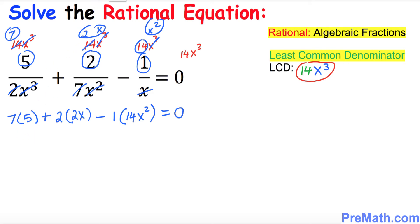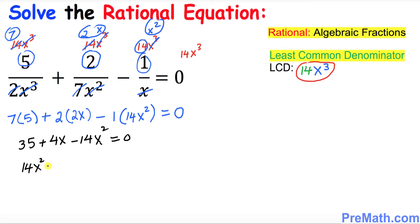Let's simplify: 7 times 5 is 35, plus 4x, minus 14x² equals 0. Now multiply through by a negative sign to rewrite this as 14x² minus 4x minus 35 equals 0. This is a quadratic equation and we want to solve it for x.